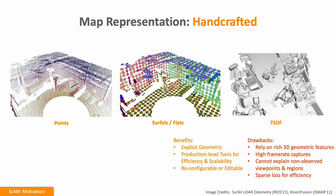SLAM fundamentally has revolved around the question of map representation. Traditional methods have used points, cell fills, voxels, TSDFs, and many more representations. However, these representations rely on rich geometric features and can't explain non-observed viewpoints or regions.